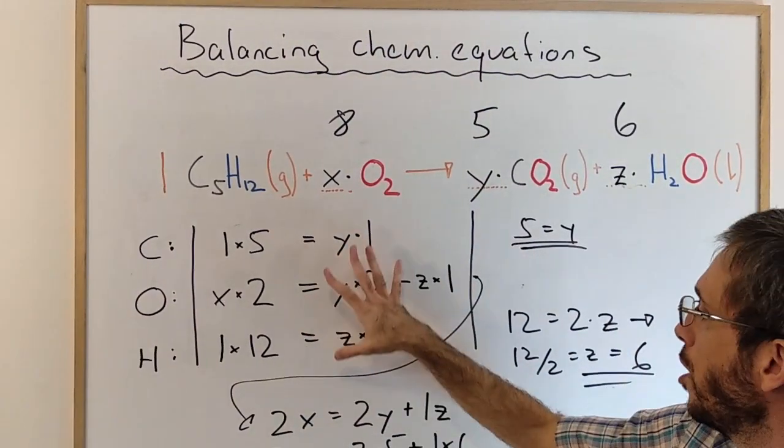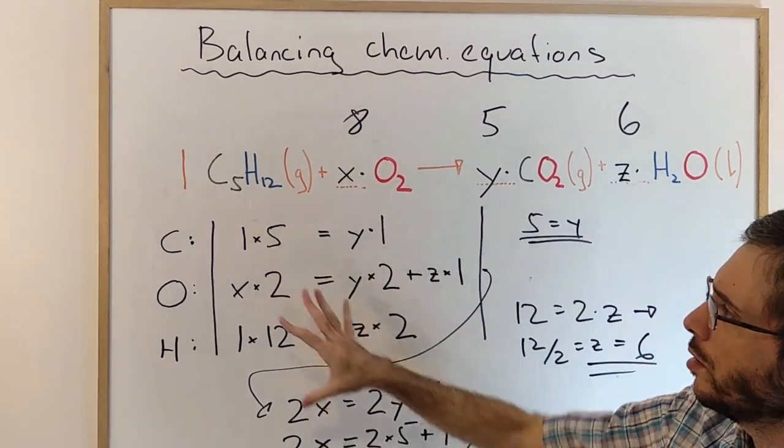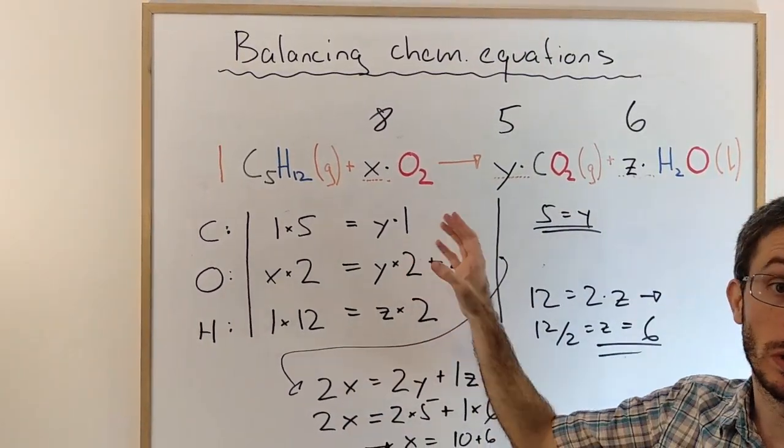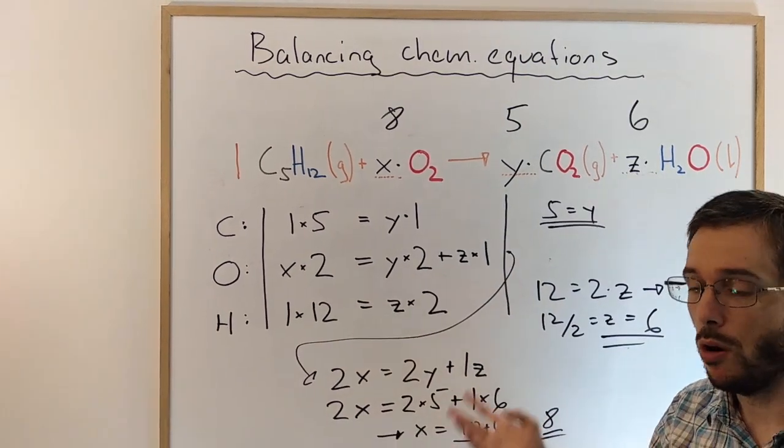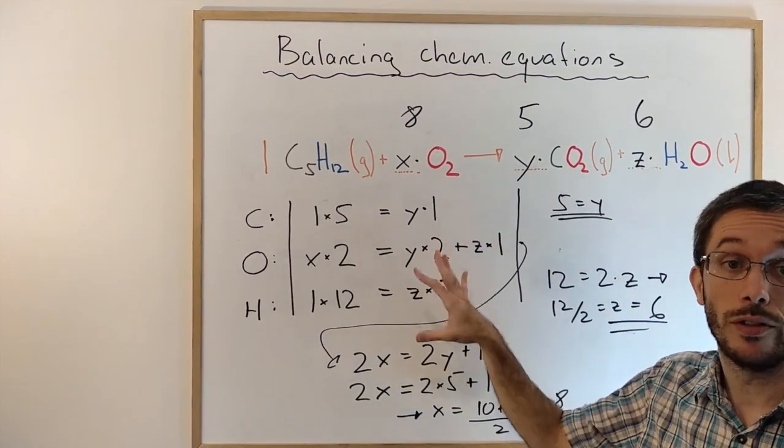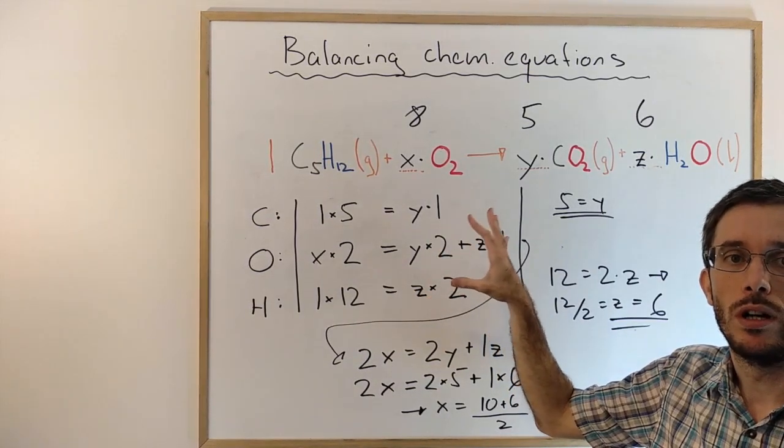How you get from the system of equations to the answer depends a bit on how your problem is. You can solve for one unknown and substitute in the other. You can use the Gauss algorithm or you can use the calculator, if your calculator has a setting to solve a linear equation with three unknowns.